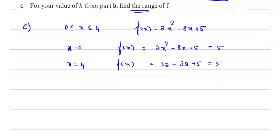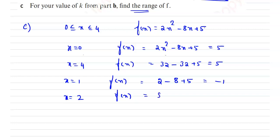Checking intermediate values: for x equal to 1, f(x) equals 2 minus 8 plus 5, which is minus 1. For x equal to 2, f(x) equals 8 minus 16 plus 5, which is minus 3. For x equal to 3, f(x) equals 18 minus 24 plus 5, which is minus 1.